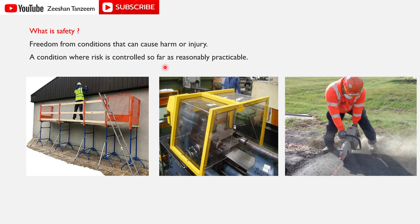Worker height पर काम कर रहा है, hazard है fall from height। यहाँ पर आपने proper safe access provide किया हुआ है — solid structure, top rail, mid rail, mesh, out-triggers दिये गए हैं। अभी भी गिरने के थोड़े chances हैं लेकिन जहाँ तक मुमकिन हो सके control measure लगा दी गई है — this condition can be classified as safe condition।